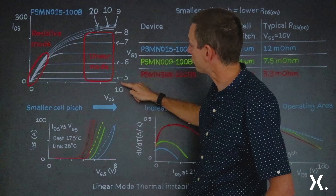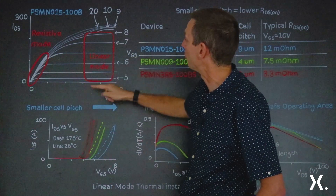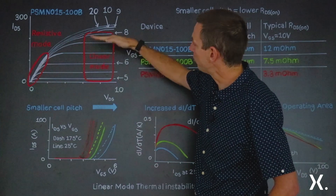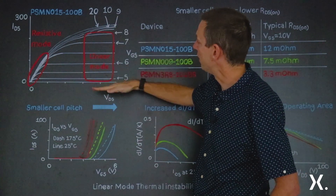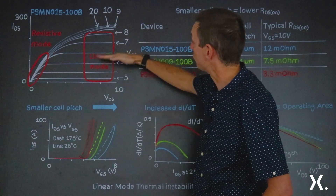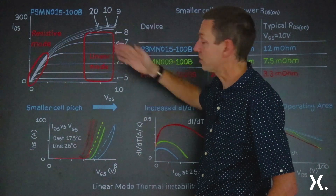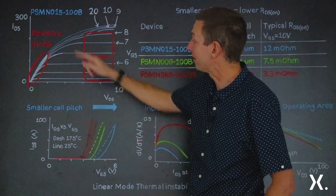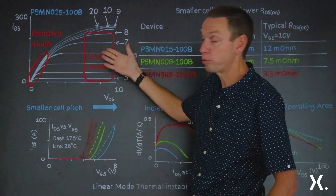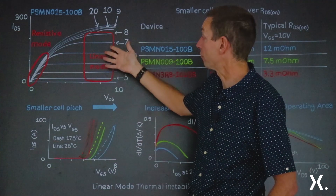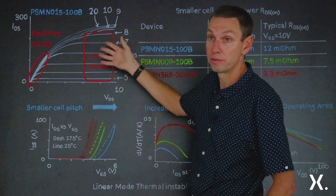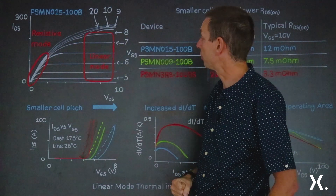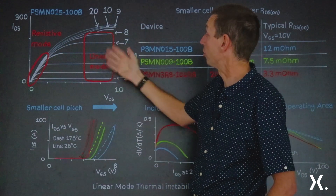This region — where we've got high source-drain voltage and high current flowing through the MOSFET — is what we call the linear mode. Here you can see the output characteristic: the current coming out of the MOSFET is pretty independent of the source-drain voltage, and is a strong function of the gate bias. This is a high power dissipation situation. If you operate for any length of time, the MOSFET can start to get hot, and if it gets hot we're going to be concerned about thermal runaway — will it be stable operating in this area?